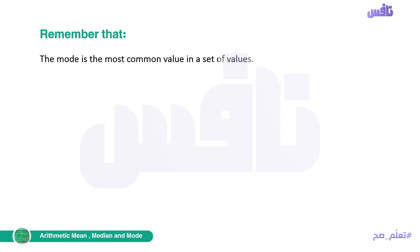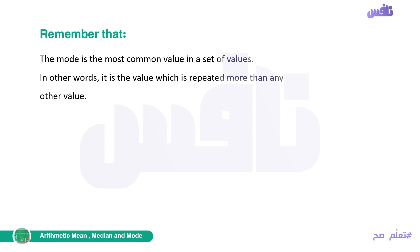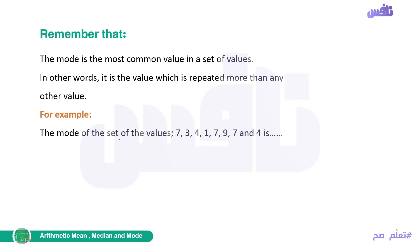Remember that we also studied the mode in first prep. The mode is the most common value in a set of values — in other words, it is the value which is repeated more than any other value. For example, the mode of the set: 7, 3, 4, 1, 7, 9, 7, 4. Seven appears three times; four appears only twice. So the mode is 7.